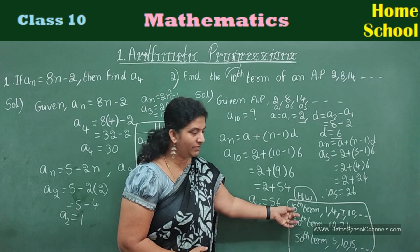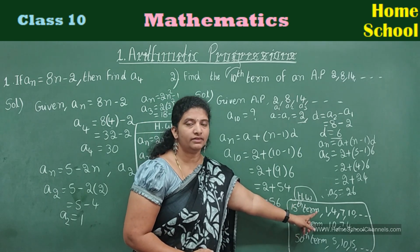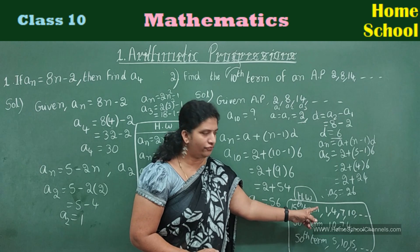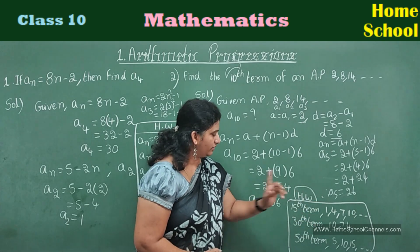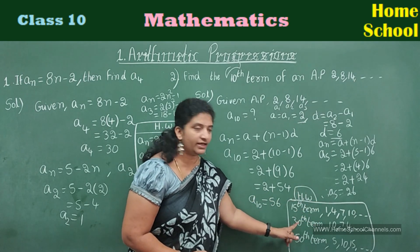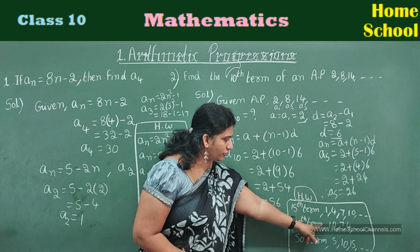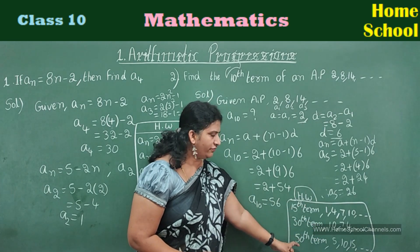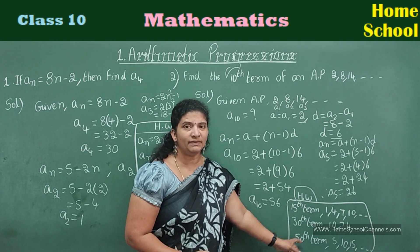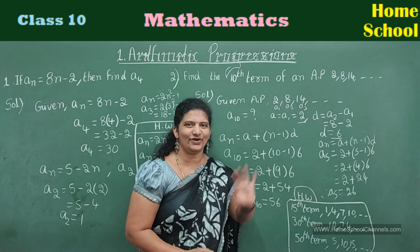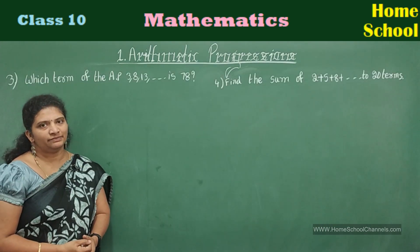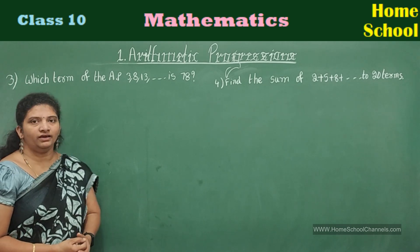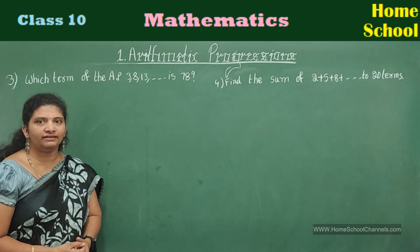If you understand this, try these three problems as homework. First: find the 15th term of the AP 1, 4, 7, 10, and so on. Second: find the 30th term of the AP 10, 7, 4, and so on. Third: find the 50th term of the AP 5, 10, 15, and so on.